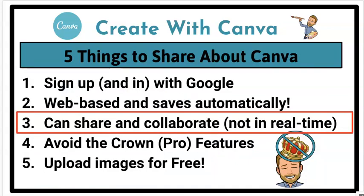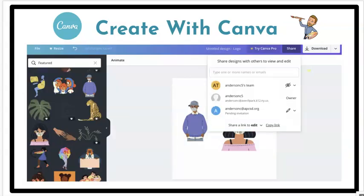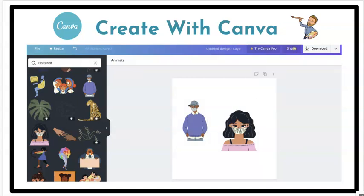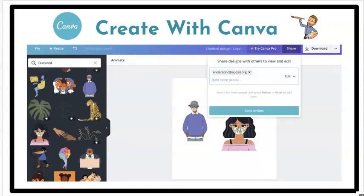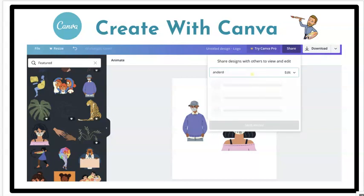The third thing I want to point out about Canva is that you can share and collaborate, but not in real time. Google tends to spoil us because we think when we share things with one another, that means we can automatically, simultaneously, and synchronously work in a given space. The good news is that in Canva you can share — you can give people edit or view permission, invite them via email or via link, and they can work on the same project as you. It just can't be at the same time.